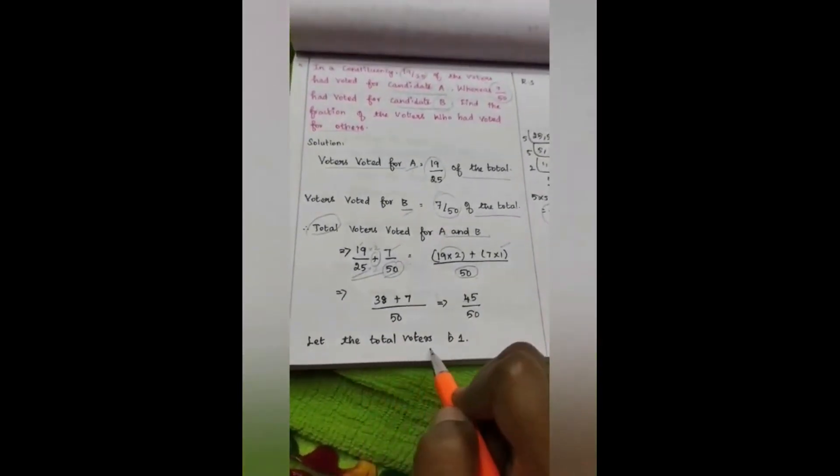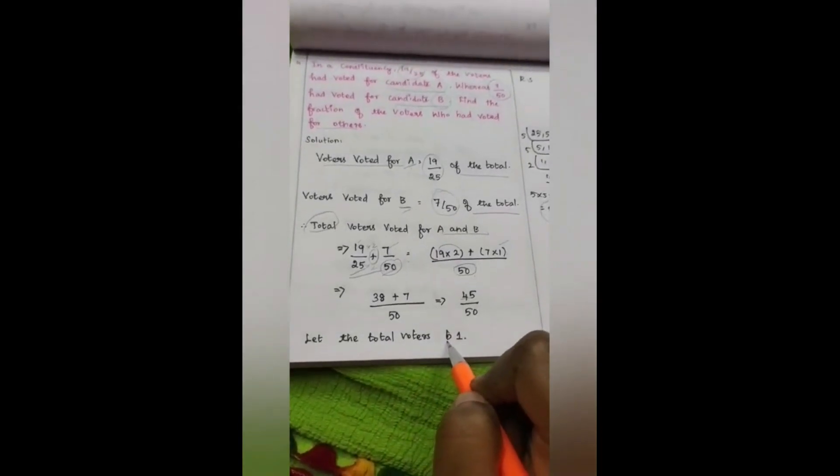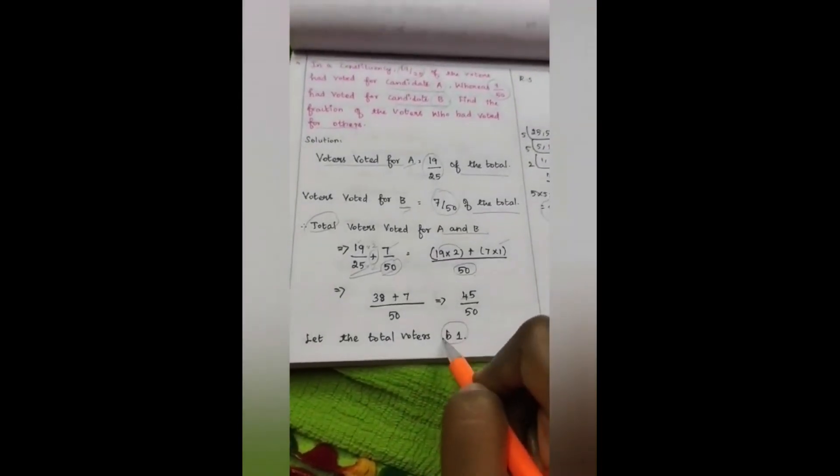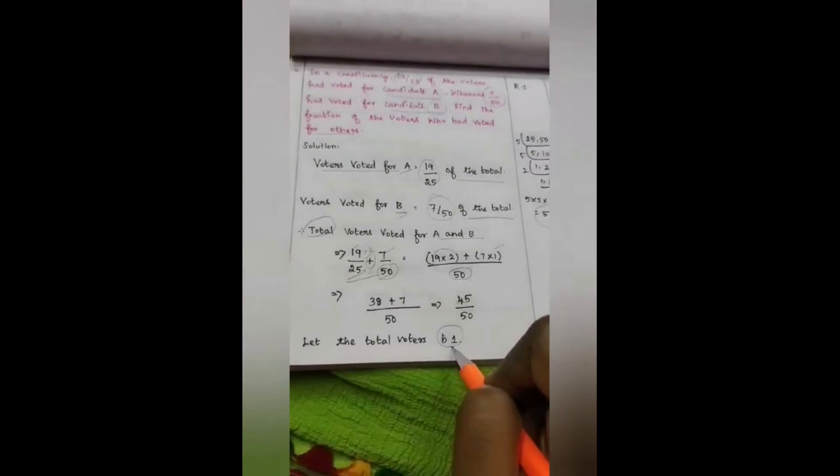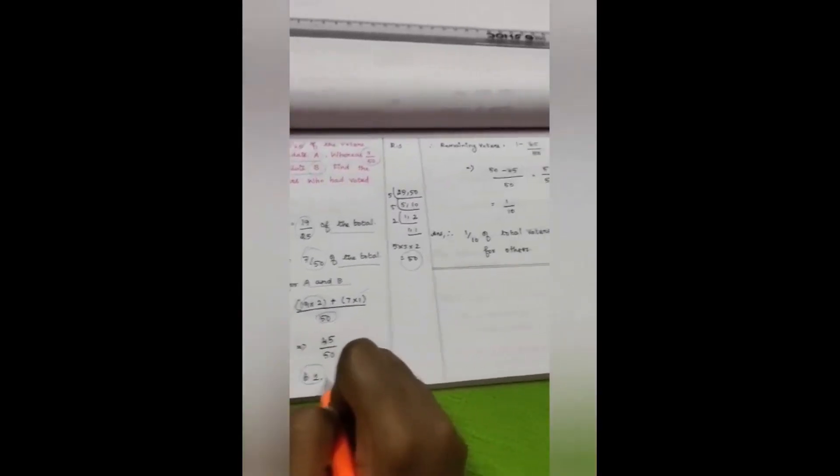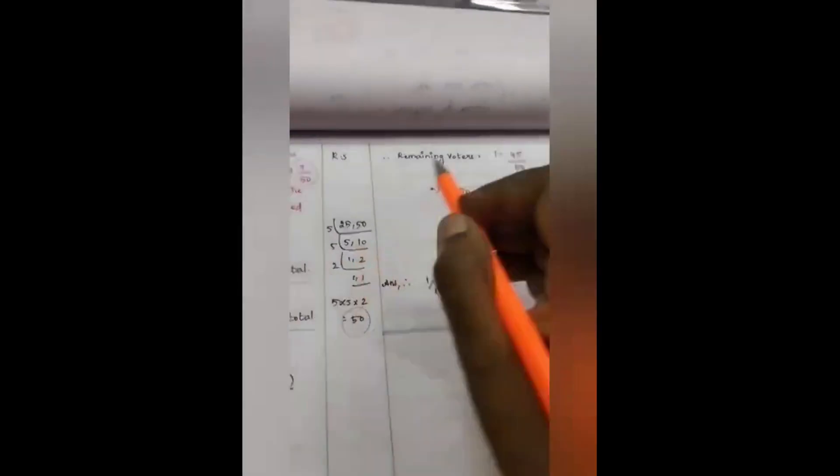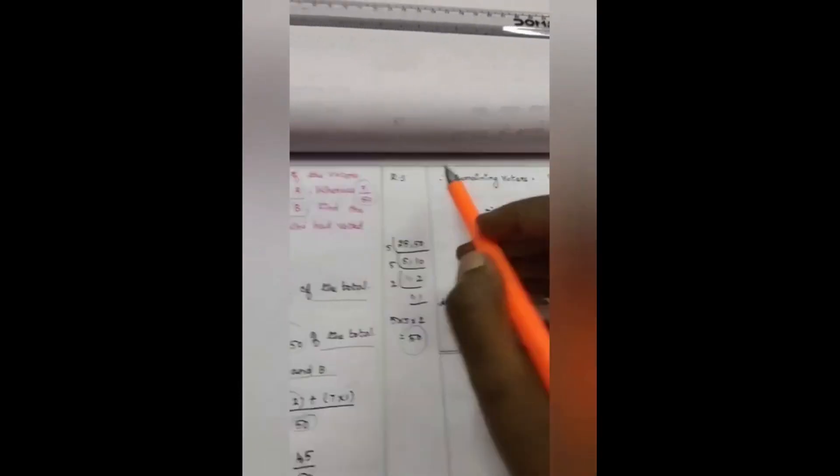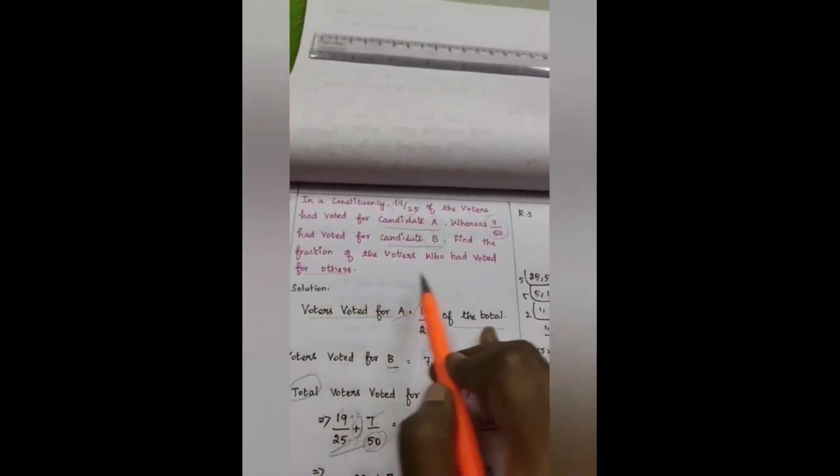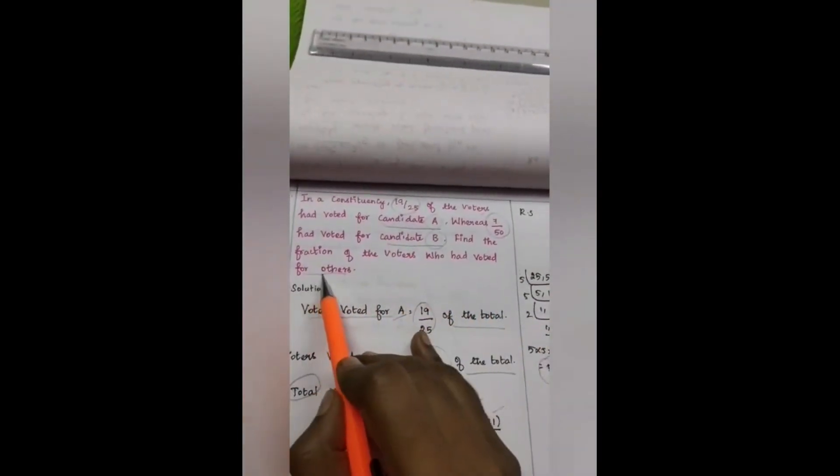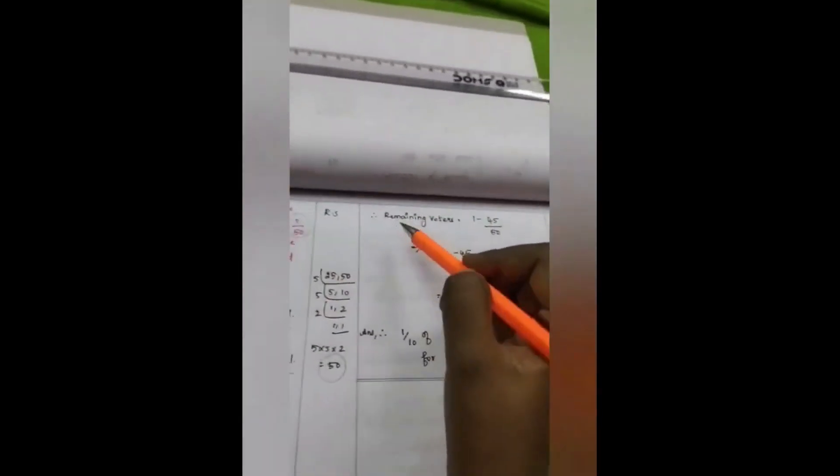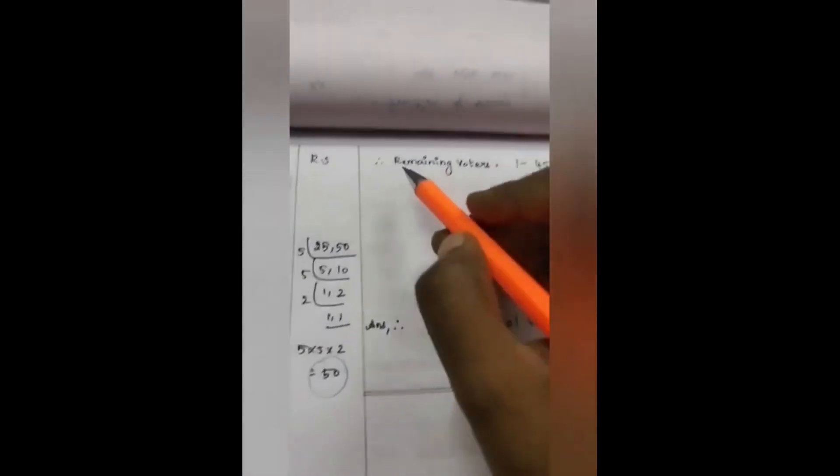Let the total voters be 1. Total voters, how much is considered as 1 percentage. So what we have to do now, we're going to find remaining voters who had voted for others. Therefore, remaining voters equals 1 minus 45 divided by 50.